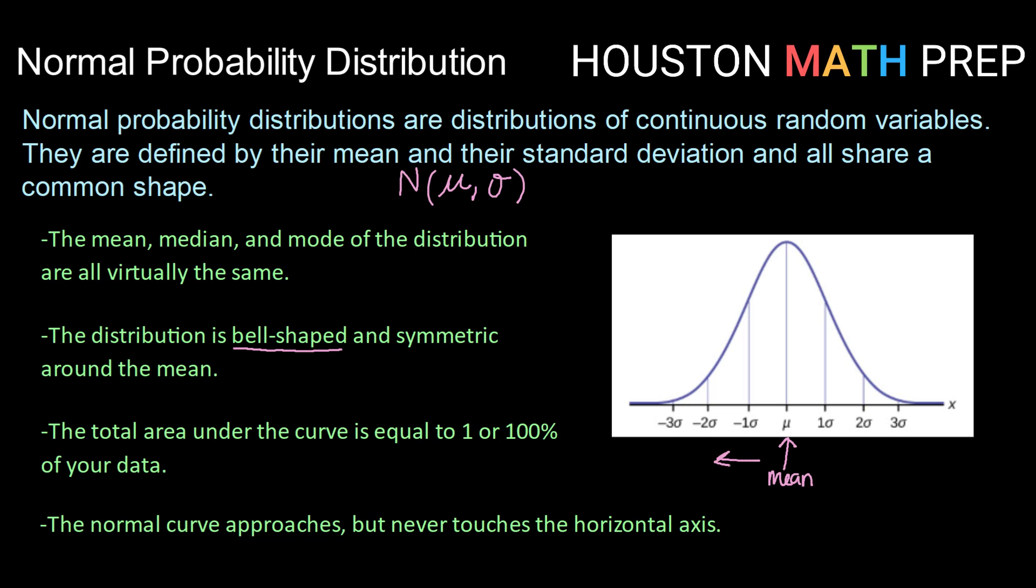Symmetric means we know we have 50% of the data below the mean and 50% above the mean. We also know that not only is our mean right there in the middle, but our median and our mode are pretty much the same as the mean. So all of those kind of get stacked right here in the center.